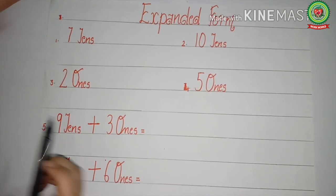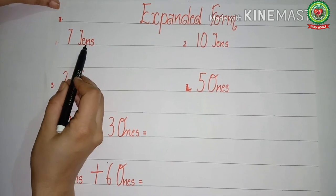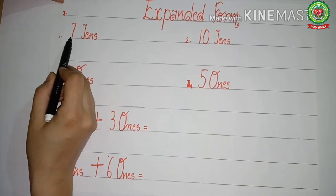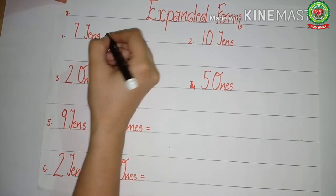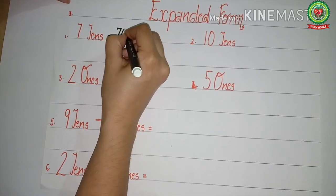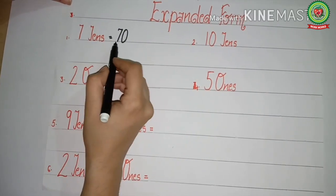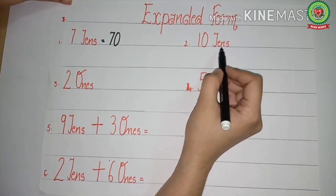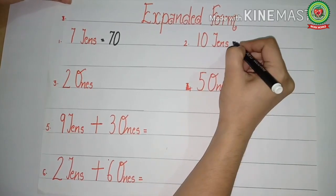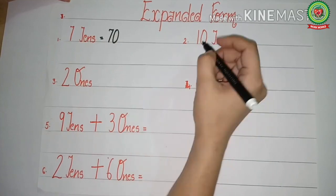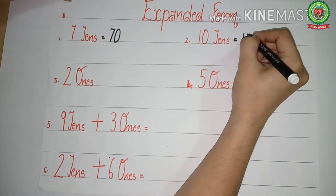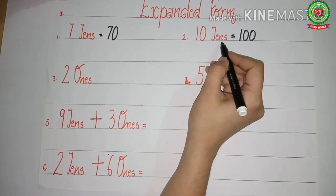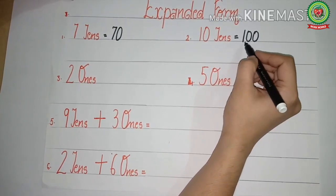Now read the statement with me: seven tens. Tens has one zero, so we will write seven tens as seven-zero — seventy. Seven tens means 70. Now read this: ten tens. Again, tens has one zero, so we write ten and add one zero here. Ten tens means one hundred.